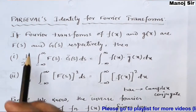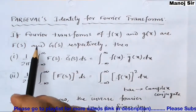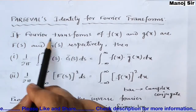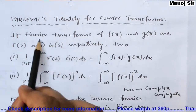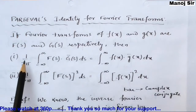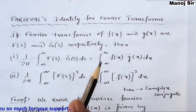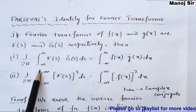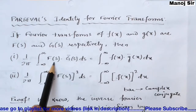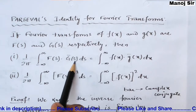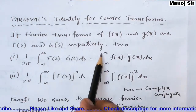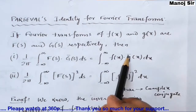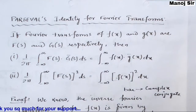Let us start with Parseval's identity for Fourier transform. If the Fourier transform of f(x) and g(x) are F(s) and G(s) respectively, then we have two very important identities that we are going to prove. The first is: (1/2π) ∫₋∞^∞ F(s) · Ḡ(s) ds = ∫₋∞^∞ f(x) · ḡ(x) dx, where bar denotes complex conjugate.